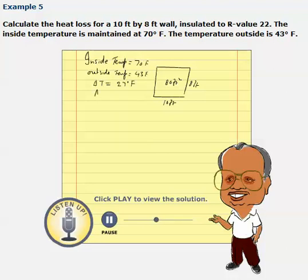Now, area is given. A is, we already calculated, 80 square feet, and R value is also given as 22, which is 22 foot square degrees Fahrenheit hour over BTU.